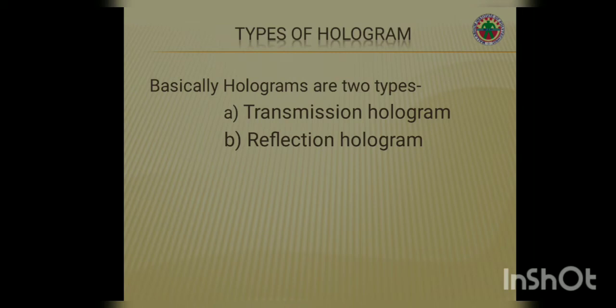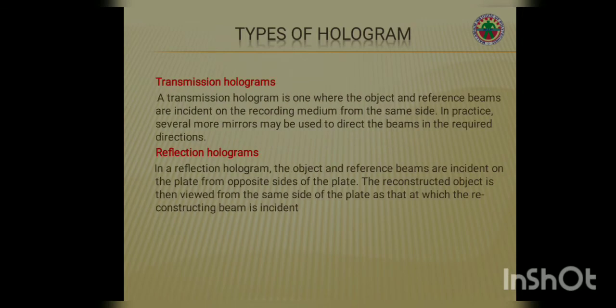Types of holograms. Basically, holograms are of two types: transmission hologram and reflection hologram. A transmission hologram is one where the object and reference beams are incident on the recording medium from the same side. Whereas, in a reflection hologram, the object and reference beams are incident on the plate from opposite sides of the plate.